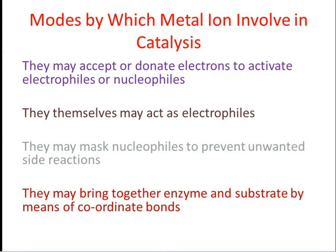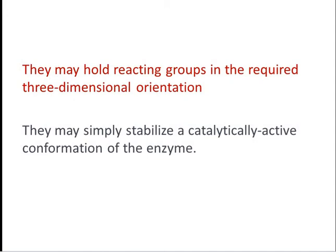Metal ions can be involved in enzyme catalysis in a variety of ways. They may accept or donate electrons to activate electrophiles or nucleophiles, or they themselves may act as electrophiles. They may mask nucleophiles to prevent unwanted side reactions, or bring together enzyme and substrate via coordinate bonds, possibly causing strain to the substrate. They may hold reacting groups in the required three-dimensional orientation, or simply stabilize a catalytically active conformation of the enzyme.